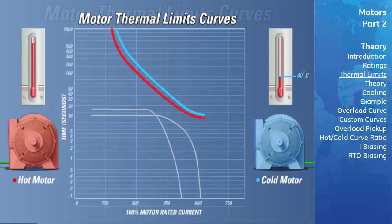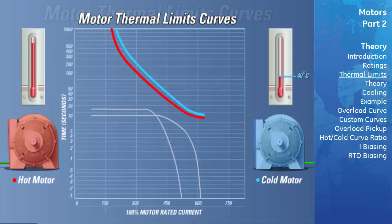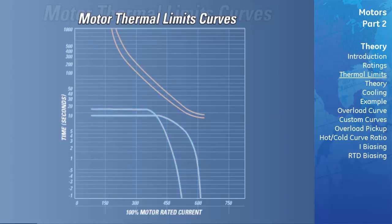Likewise, the hot thermal limit curve indicates the amount of overload current the motor can withstand before damage occurs when the motor is hot — meaning it has been running at rated full load current for an amount of time such that the temperature of the motor has risen to its rated temperature above the ambient temperature of 40 degrees Celsius. The acceleration curves are an indication of the amount of current and associated time for the motor to accelerate from a stop condition to a normal running condition.